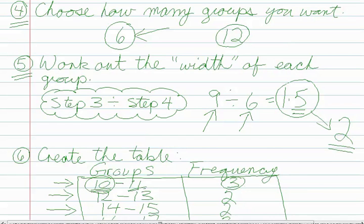We went to step four and in this step I said that you need to select how many groups you want to have in your grouped frequency table, and for this example I picked six, but as I said you could pick seven, eight, four, three, it's up to you.